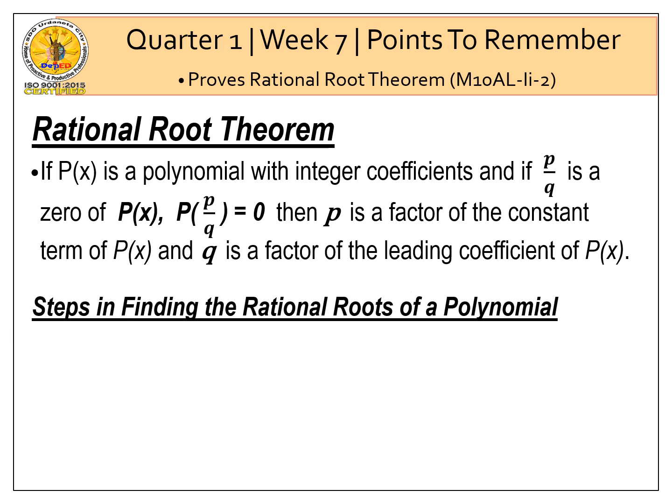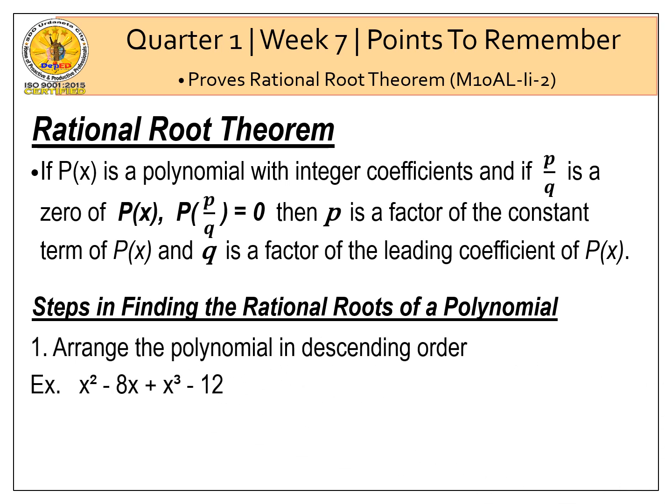Here are the steps in finding the rational roots of a polynomial. First, arrange the polynomial in descending order. When we say descending order, the term with the highest exponent must be our first term, and the constant term will be the last. So this is our descending order: x cubed plus x squared minus 8x minus 12.